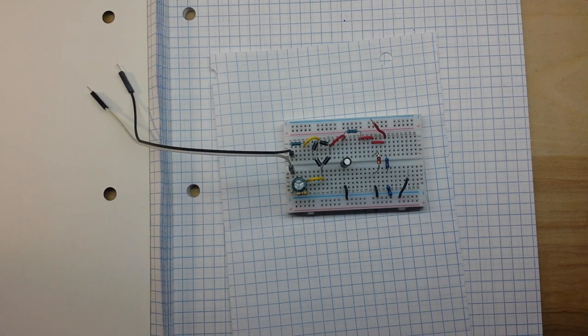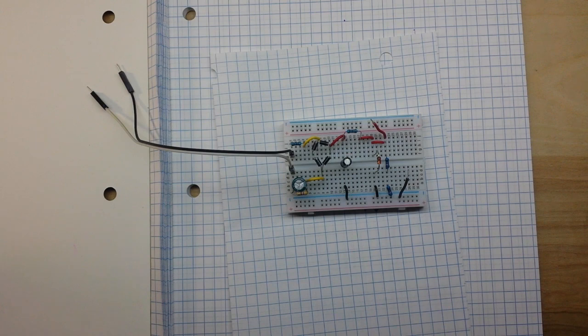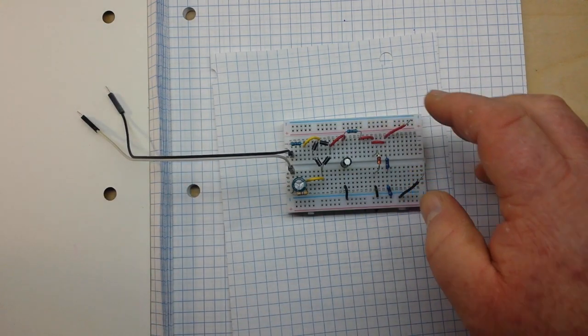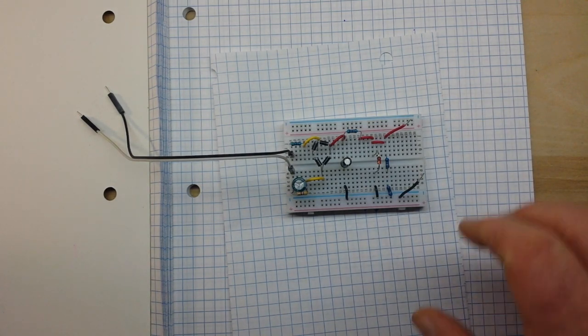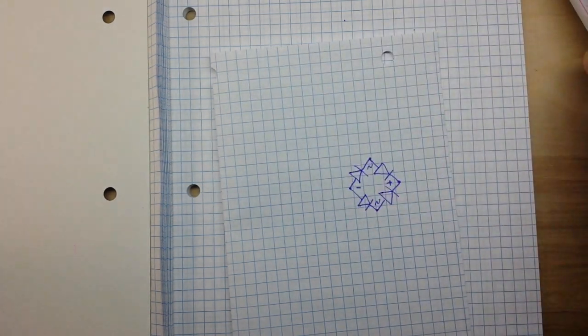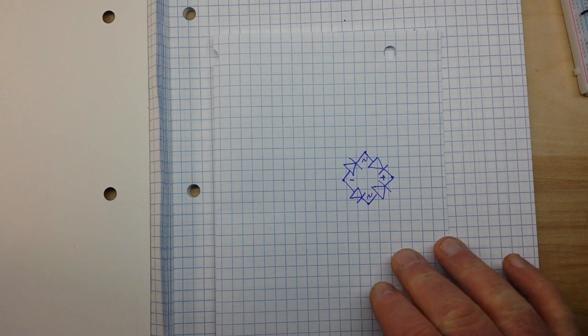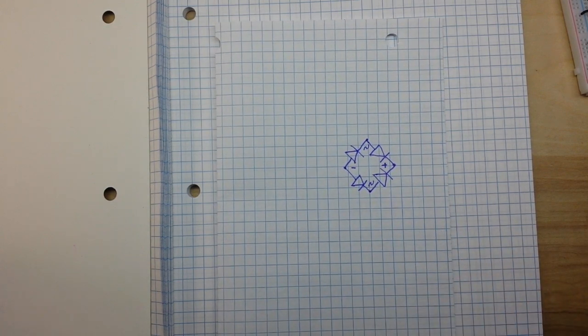And if you're a fan of Big Clive like I am, you know a lot of the stuff that he tears apart uses what he calls a capacitive dropper or a capacitive power supply, and that's what we're going to put together today. Here is a capacitive power supply that converts an AC input to a DC output.